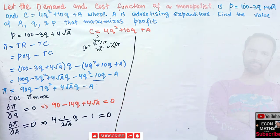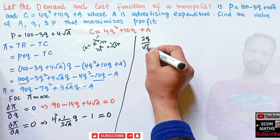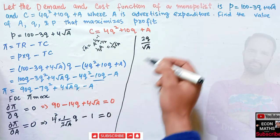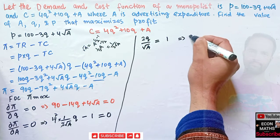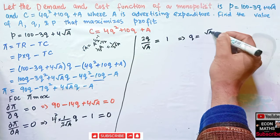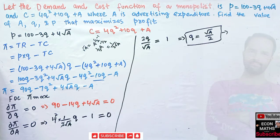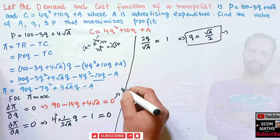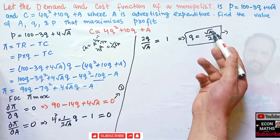Solving the second first-order condition: 2Q/√A = 1, which implies Q = √A/2. We obtained the value of Q in terms of A. Now we substitute Q = √A/2 into the first equation: 90 − 14·(√A/2) + 4√A = 0.